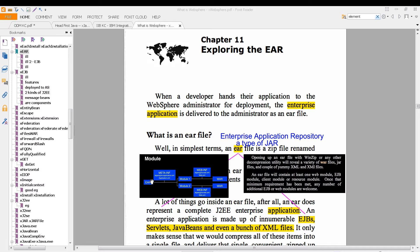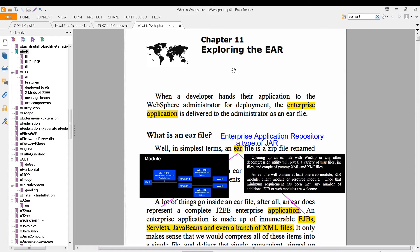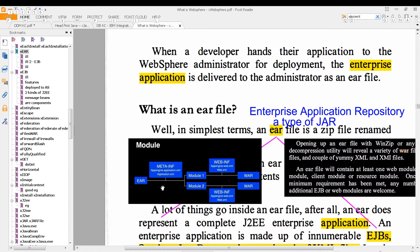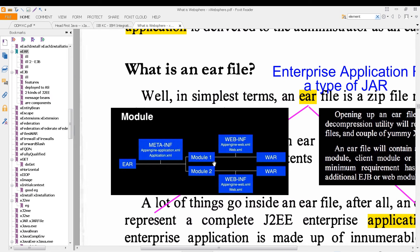Now you can see how this works if you look at Chapter 11, Exploring the EAR File from this book, which we've seen before. Notice this diagram here, so the EAR file can contain these modules, which contain those WAR files.